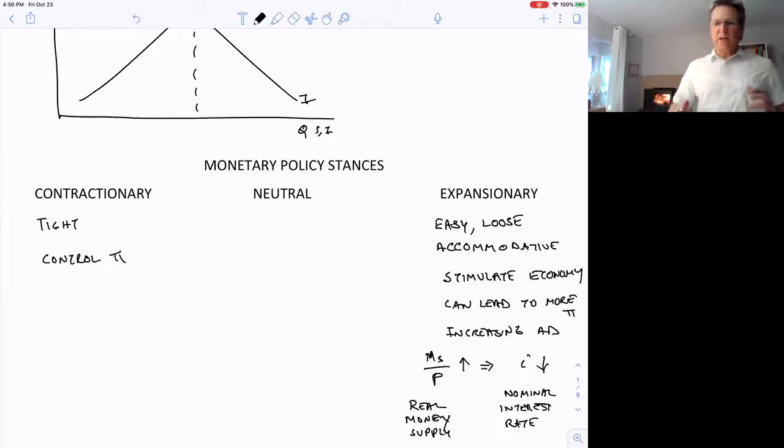Now tight or contractionary policy is generally done to control inflation. And the way it's thought to work is by decreasing aggregate demand. And neutral will be somewhere in the middle where they're not trying to stimulate the economy and they're not trying to contract it or control inflation.